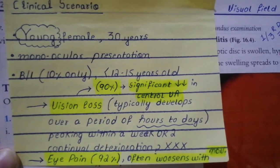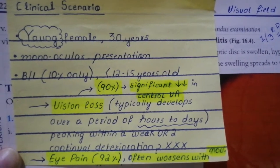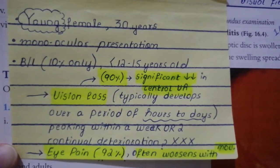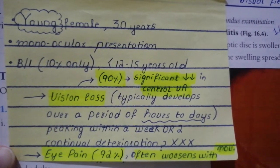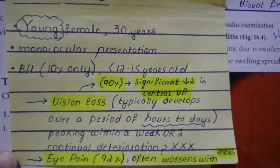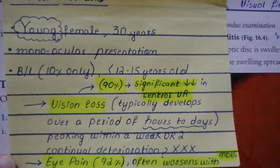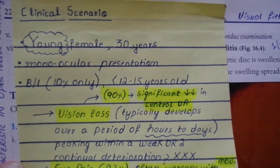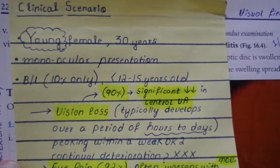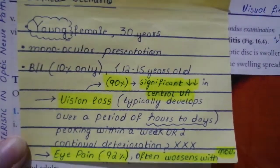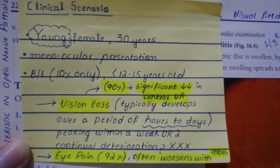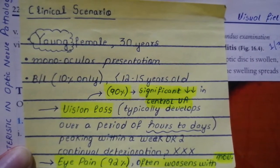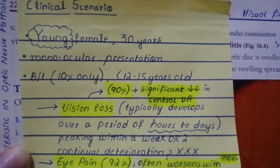It is very uncommon for both eyes to be simultaneously or successively involved. A young female around age 30 will present with sudden visual loss in one eye, developing acutely within a couple of days to a maximum of one to two weeks. Before this time interval, the patient was completely fine with visual acuity possibly 6/6 in both eyes.